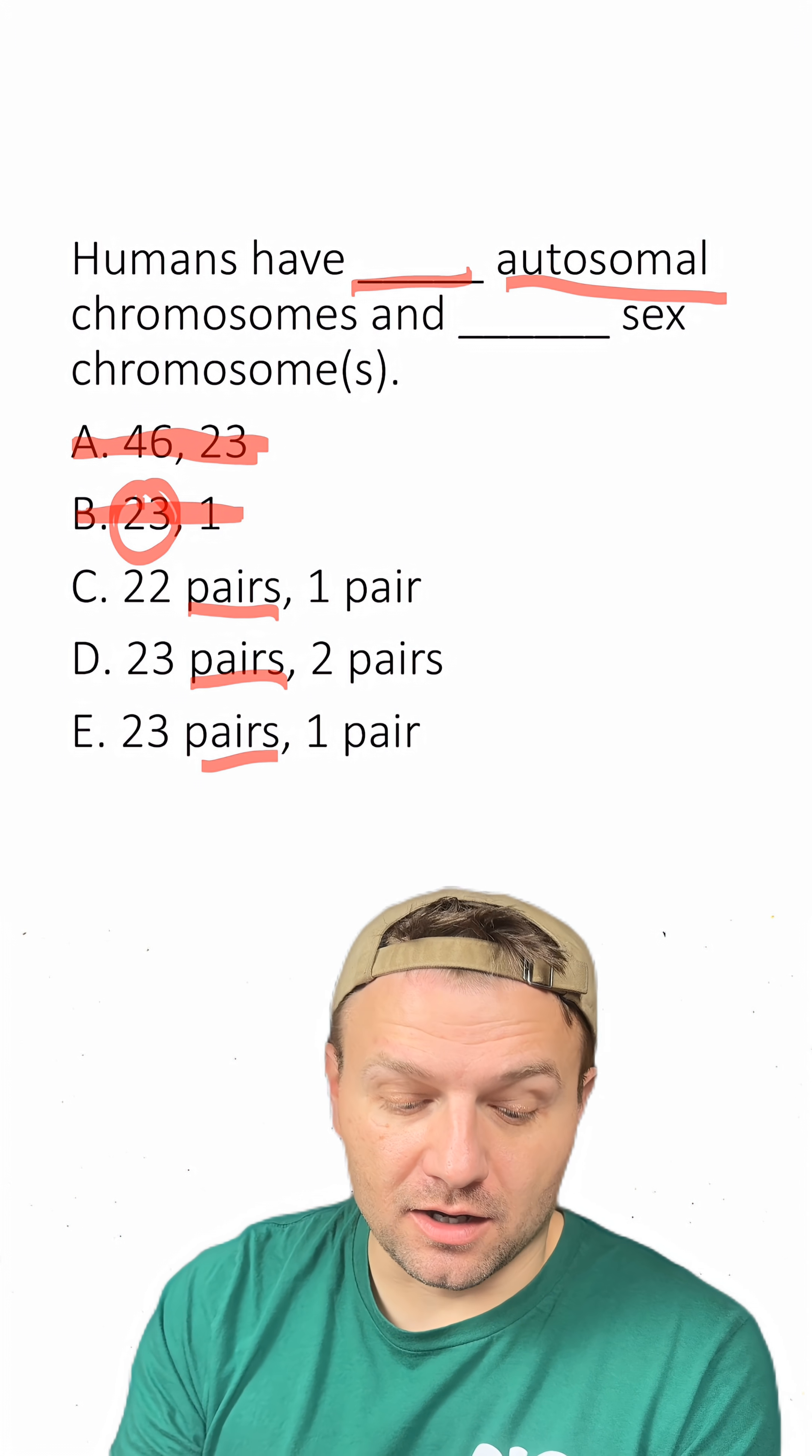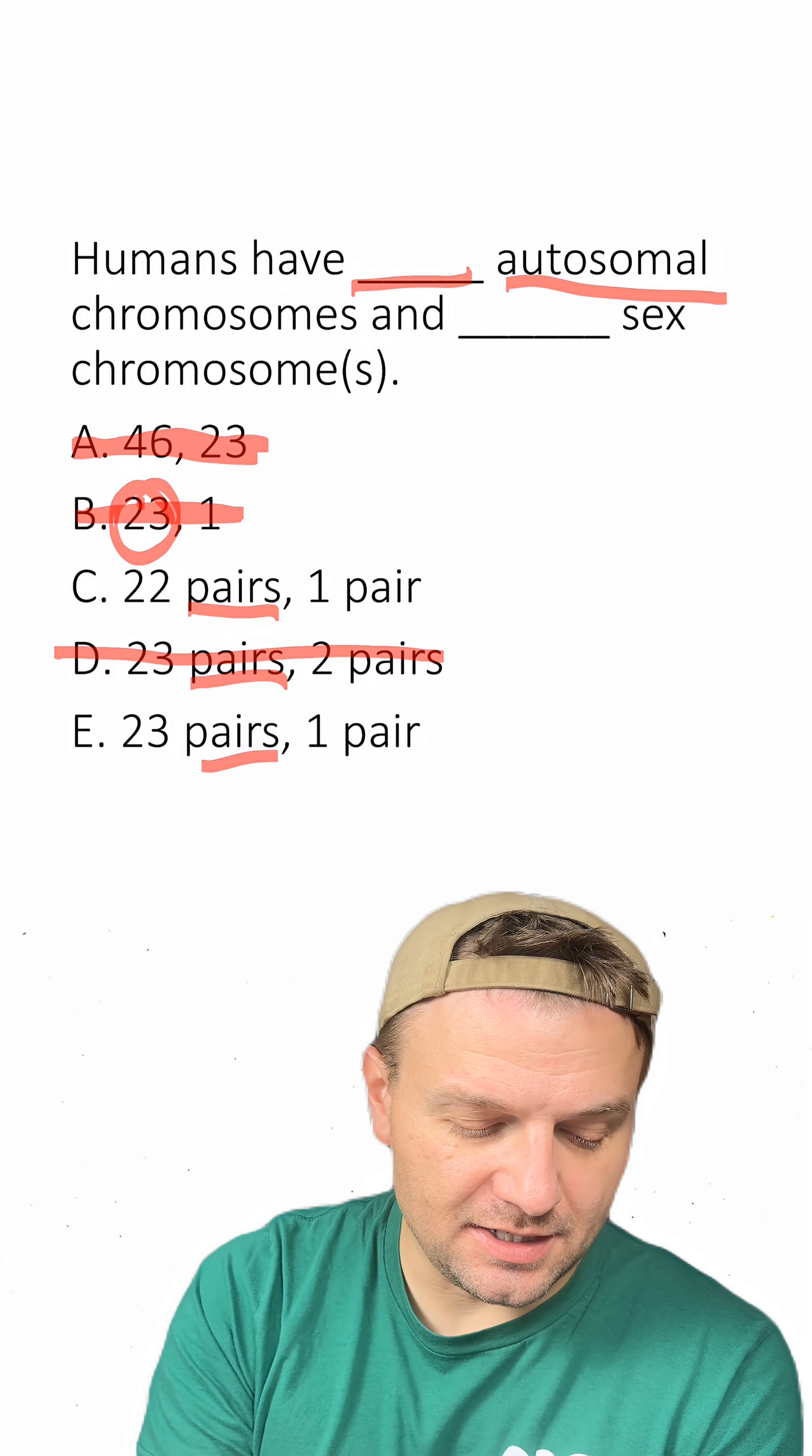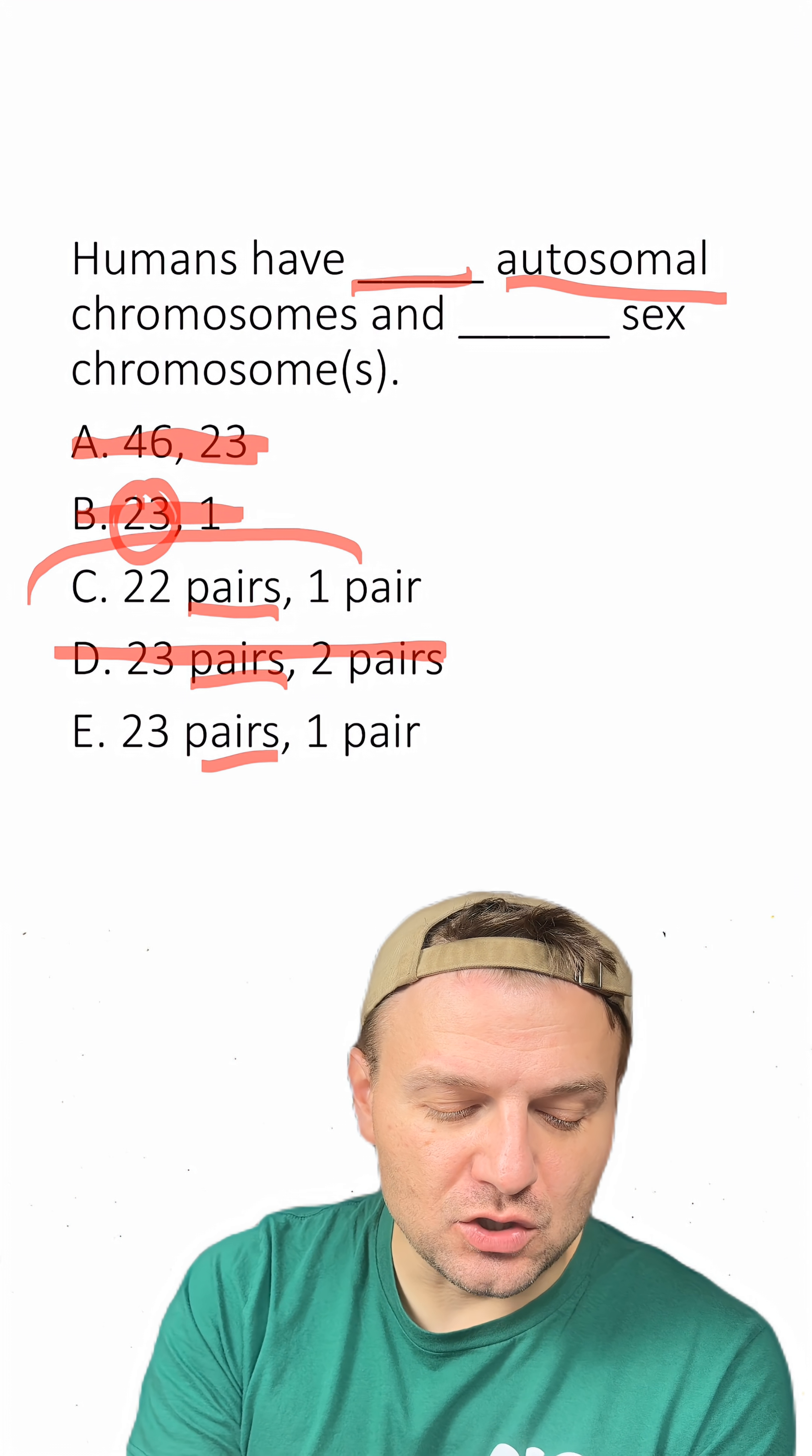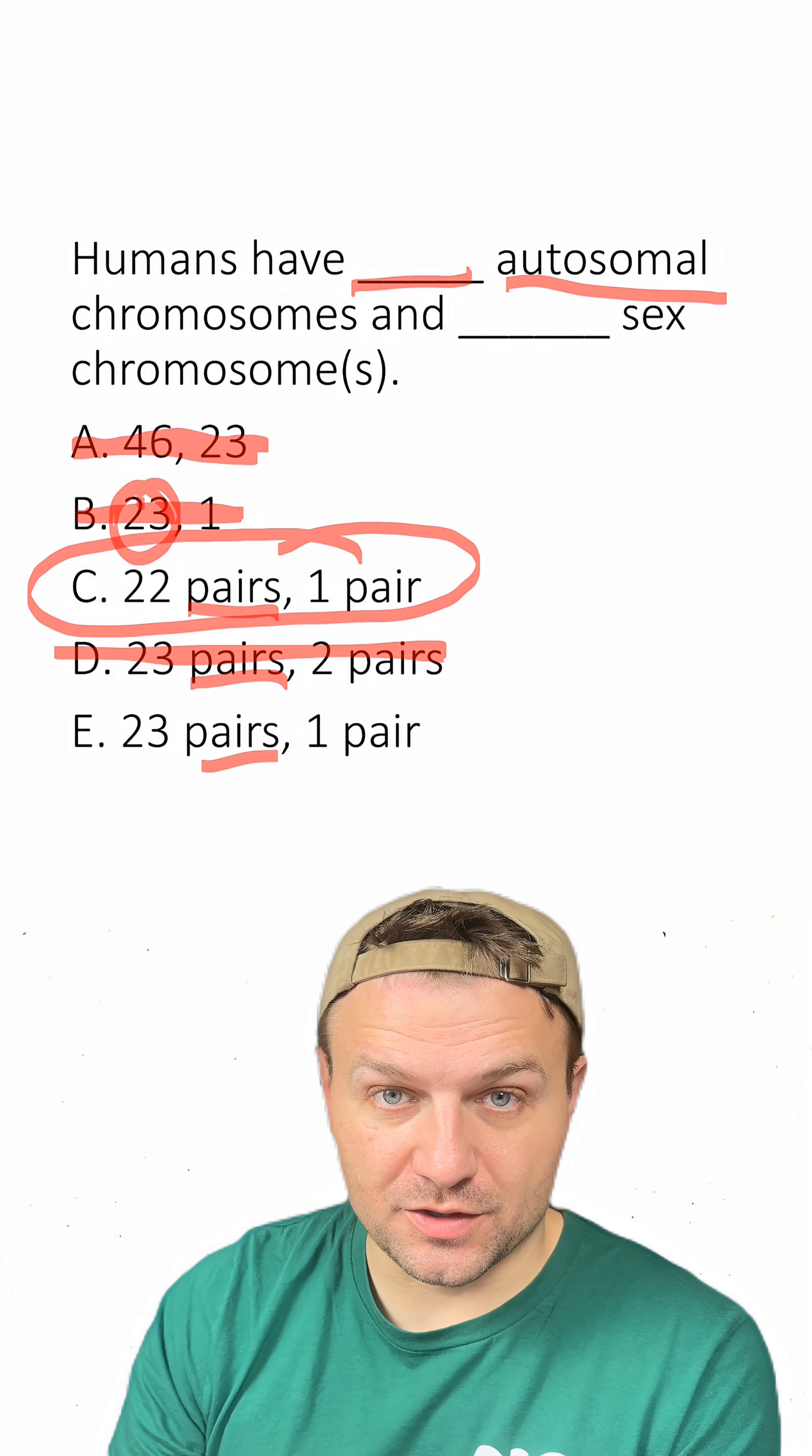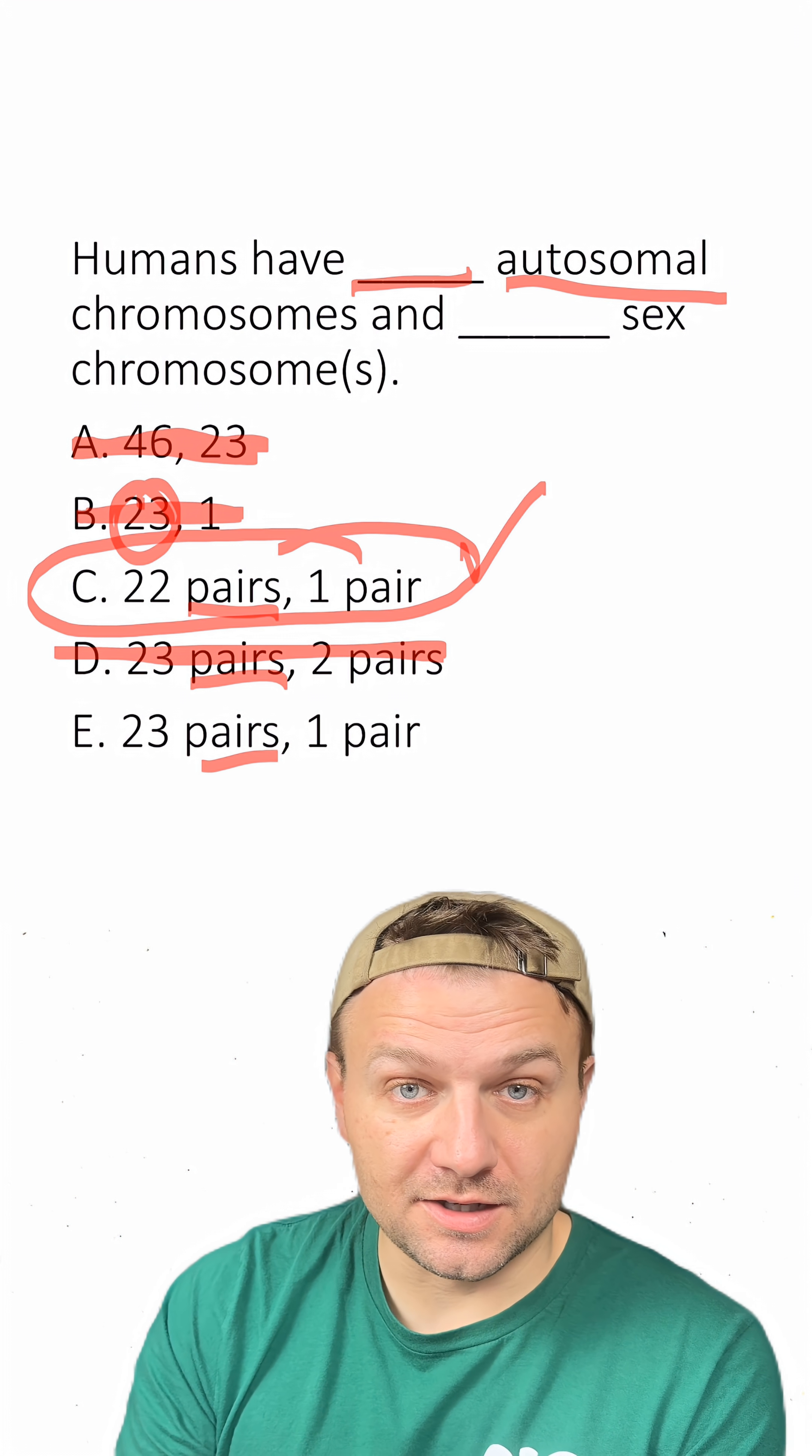Humans only have one pair of sex chromosomes, which means D here is wrong. They also are going to have 22 pairs of the autosomal chromosomes, which means C here is the right answer.